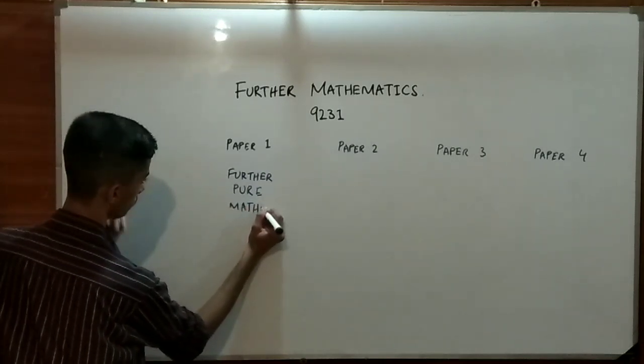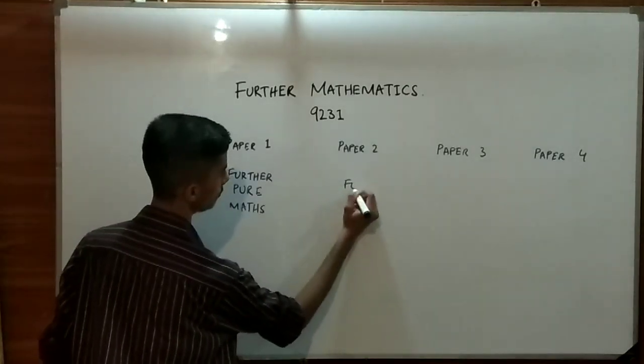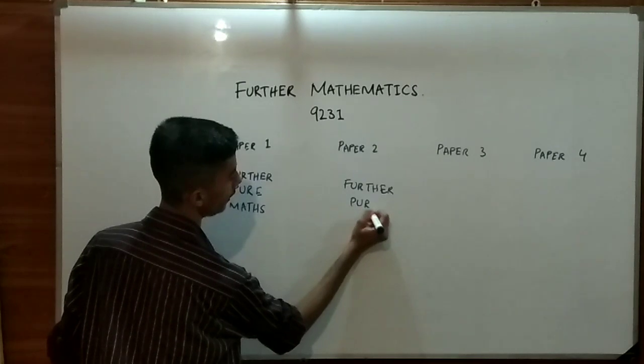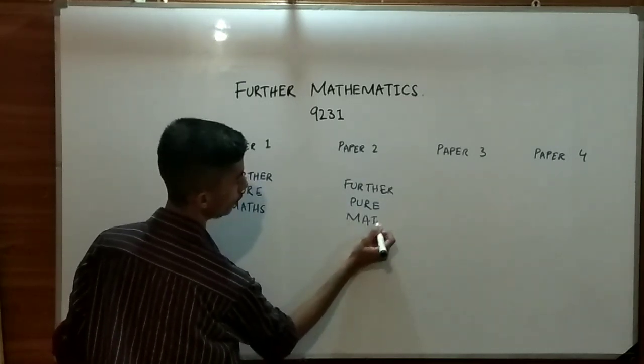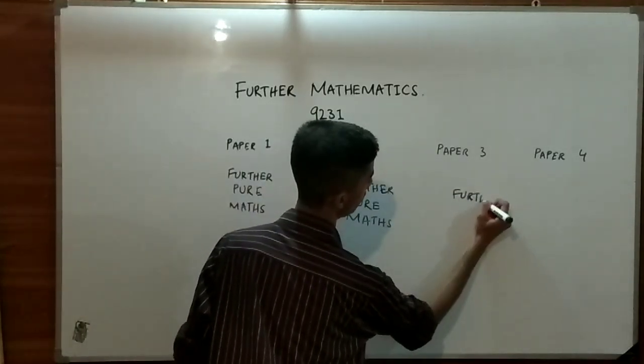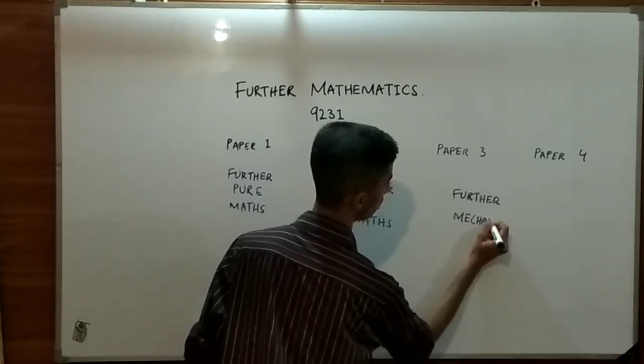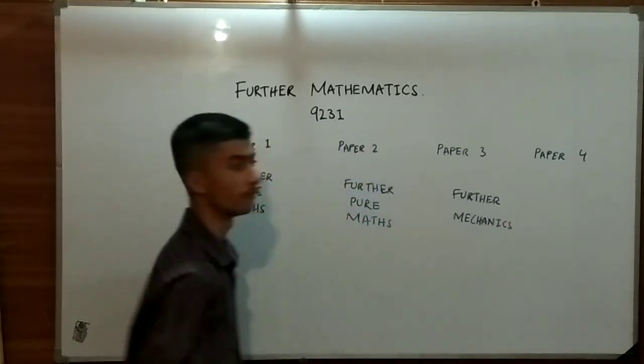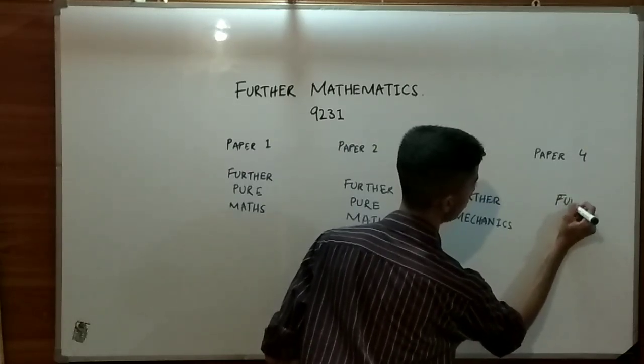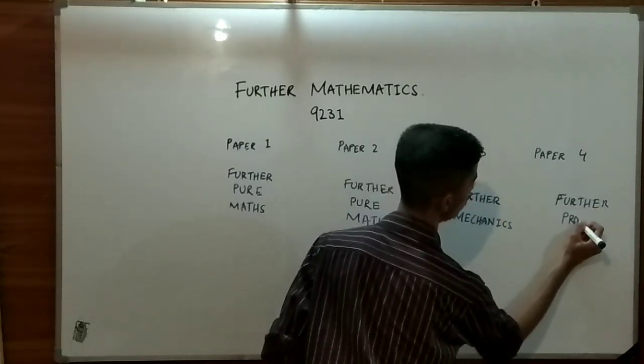Paper 2 is again of further pure math. Paper 3 is regarding your further mechanics. And last but not the least, paper 4 is known as further probability and statistics.